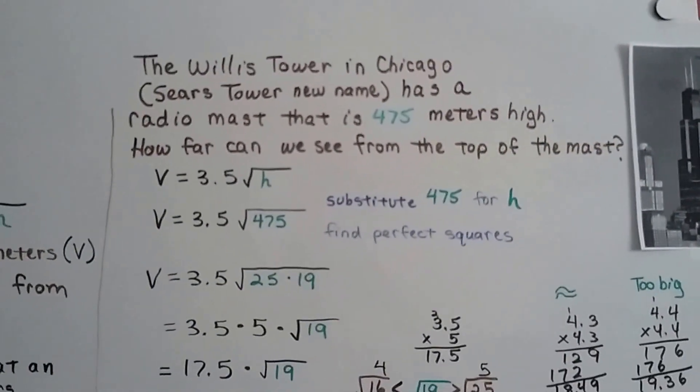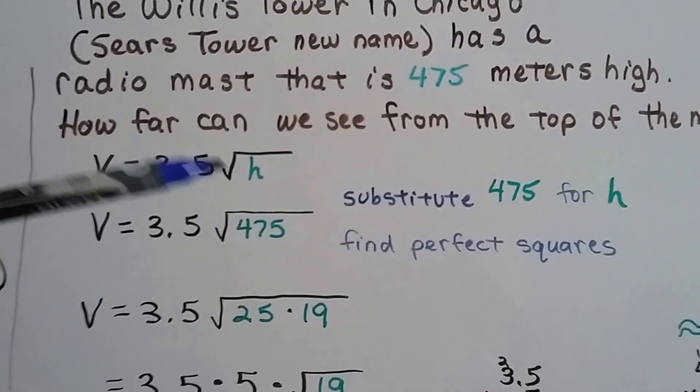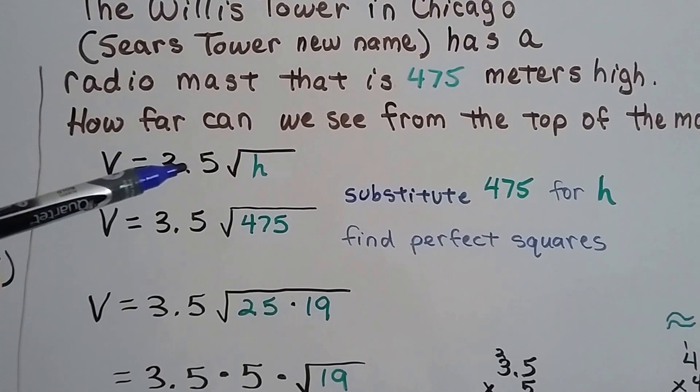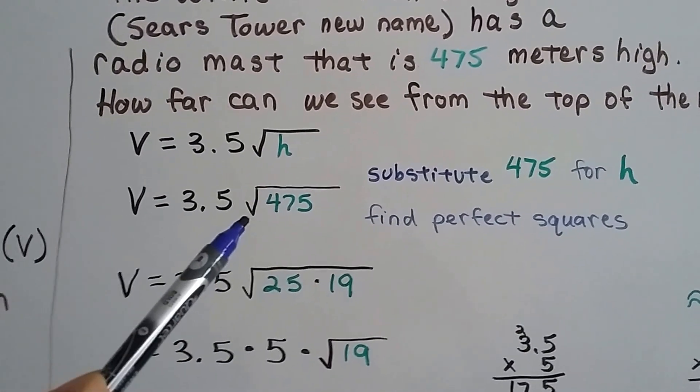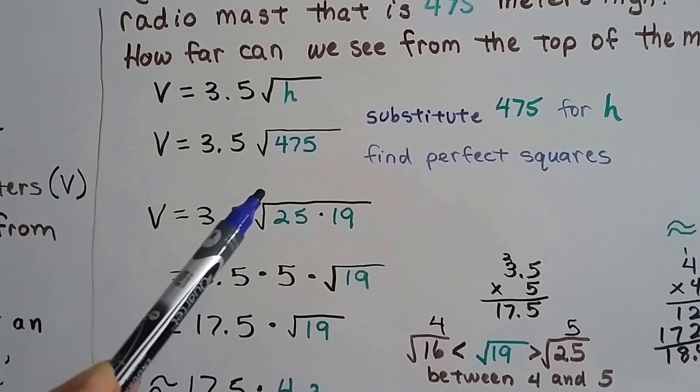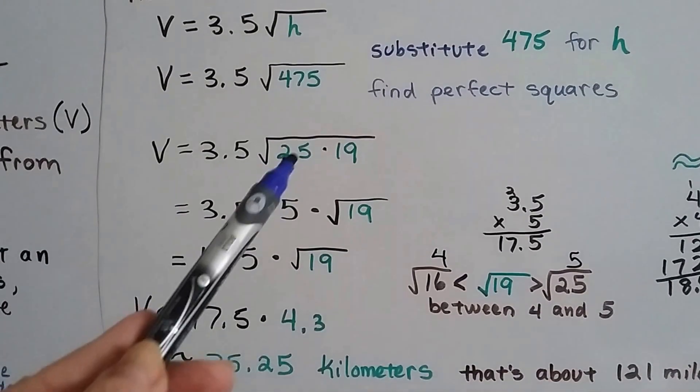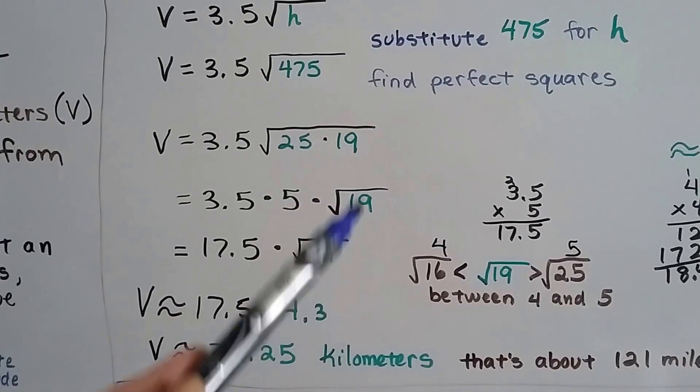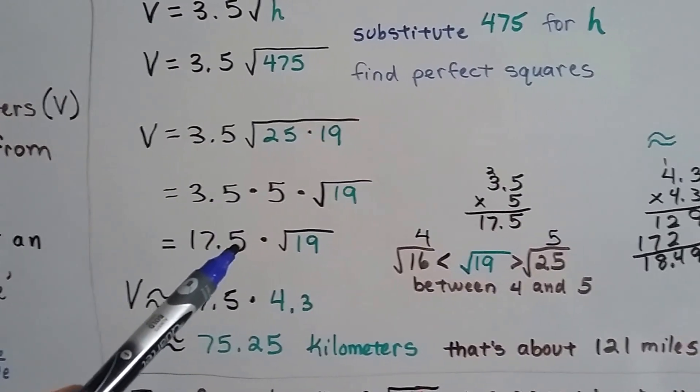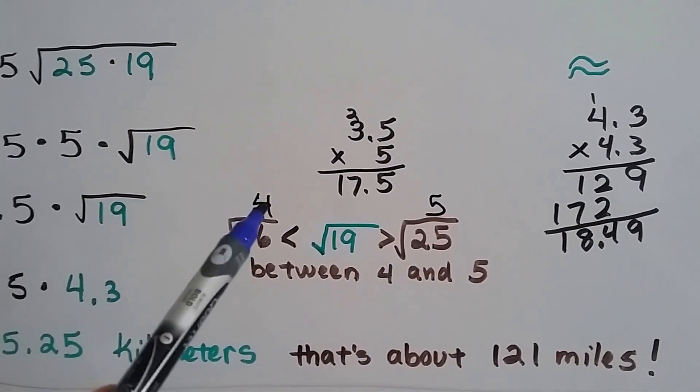We use that same formula that we used for the height in kilometers, and we plug in the 475 meters high, and we substitute that for the h. We find perfect squares, and we get 3.5 times the square root of 25 times 19, because that's a perfect square. That's not. The square of 25 is 5, so we can pull it out. This is not a perfect square, so it's going to stay underneath the radical. Now we've got 3.5 times 5, well that's 17.5. Now we need to find the square root of 19.